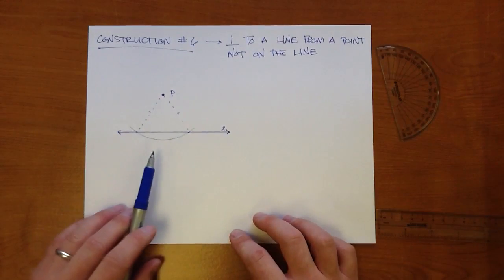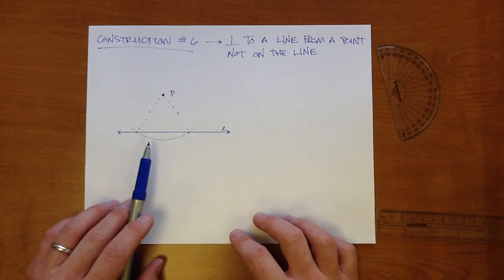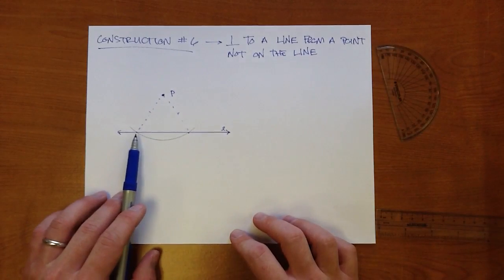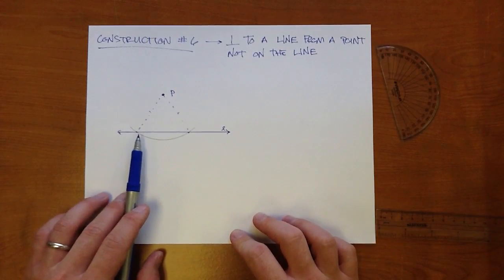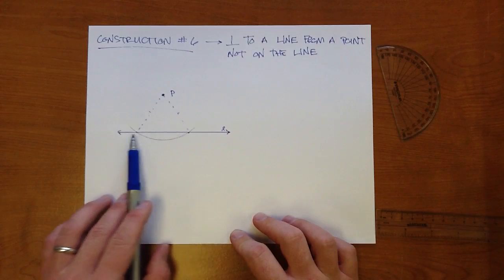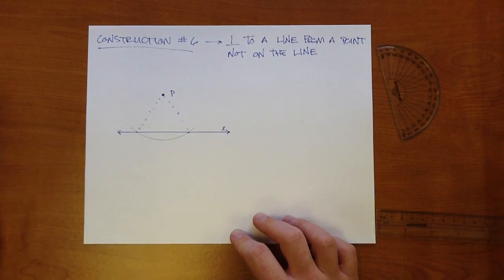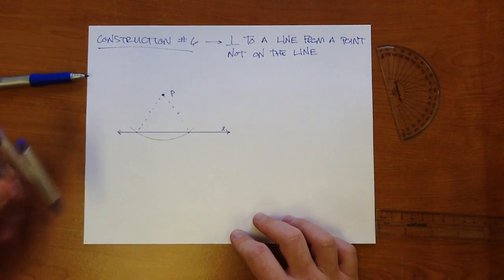So with that said, that should remind you of construction number four, where we drew the perpendicular bisector of a segment. So if we want to cut this segment in half, we can use the same methods of construction that we did before.